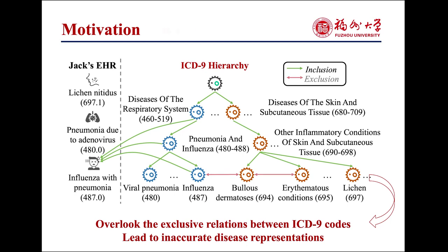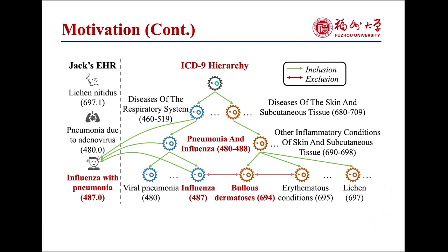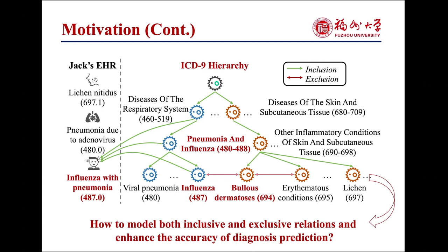For instance, as shown in the picture, if a disease like influenza is categorized under ICD-9 code 487 — that is an inclusion between disease and ICD-9 codes — it logically falls within the broader category of ICD-9 codes 480 to 488 (inclusion between ICD-9 codes), and should not be associated with ICD-9 code 694 (exclusion between ICD-9 codes). This raises a crucial question: how to model both inclusive and exclusive relations to enhance the accuracy of diagnosis prediction.